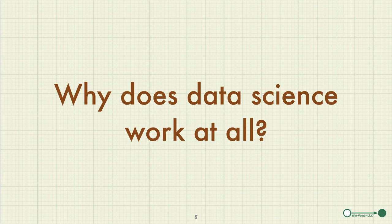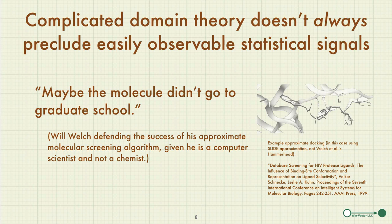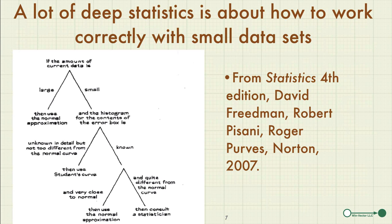Why does something like data science work at all? To my mind, the reasons are two. First, complicated domain theory doesn't always preclude the existence of easily observable statistical signals or clues. When working in biotech, one of my friends commented, 'Maybe the molecule didn't go to graduate school.' You do not need to do a full quantum ab initio simulation of all the atoms in a molecule to attempt to get molecular matches for different drugs, because many molecules act as drugs for reasons as simple as shape, confirmation, and distribution of charge — all of which can be modeled much quicker than quantum mechanics.